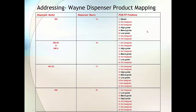In the fourth hose position, the high grade must be programmed. Fifth would be the blend, sixth would be the low. You can also check the blend ratio here as well.